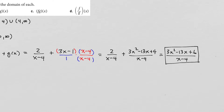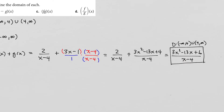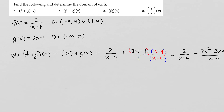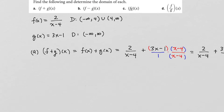The domain is all numbers except 4. We can see that for two reasons: first, you cannot plug in 4 into the simplified expression; and also, since the domain of f does not include the number 4, none of these combined functions can have a domain that includes 4 either.